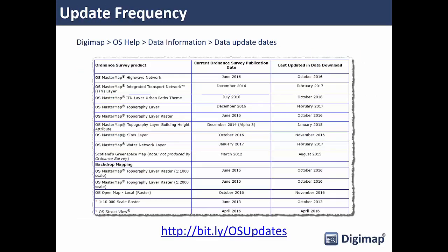We update all our datasets continuously to keep them up to date with the latest from different data providers. We publish a help page for each collection — here's the Ordnance Survey one — listing each product, the publication date by Ordnance Survey, and when we last updated it. The majority of datasets have been updated this year, and there's a separate page for each collection so you can always check how current the data is.